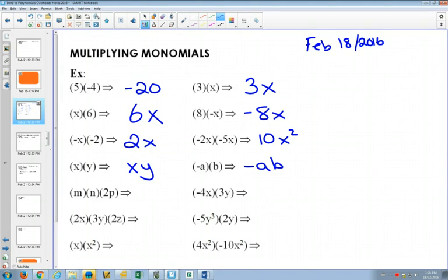So this next one is going to be negative ab. Now if you're multiplying three things, m times n times 2p, we'll multiply all the numbers in front. The only number in front that we see is the 2. What numbers are in front of the other ones that we don't see? 1. So if you did 2 times 1 times 1, you would still get 2, and then m times n times p is 2mnp.